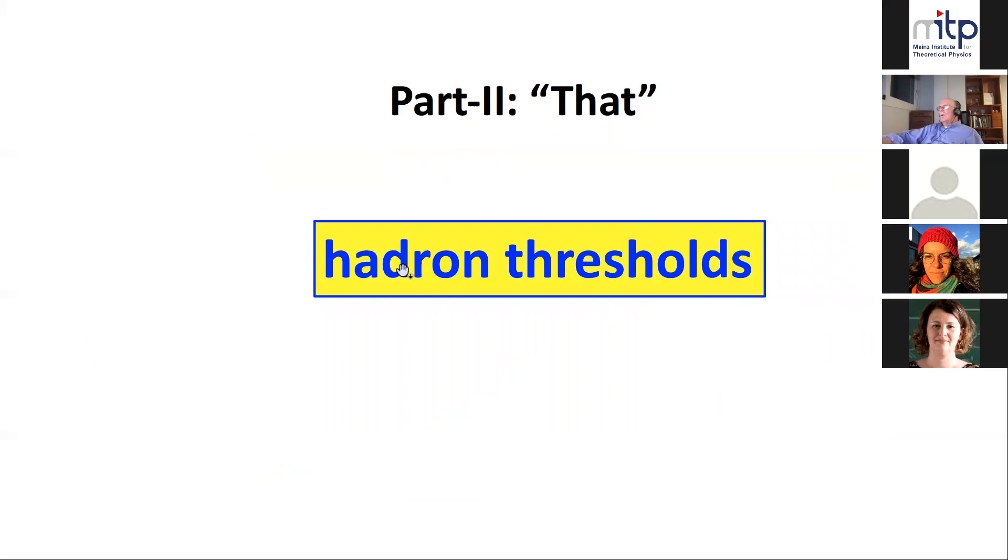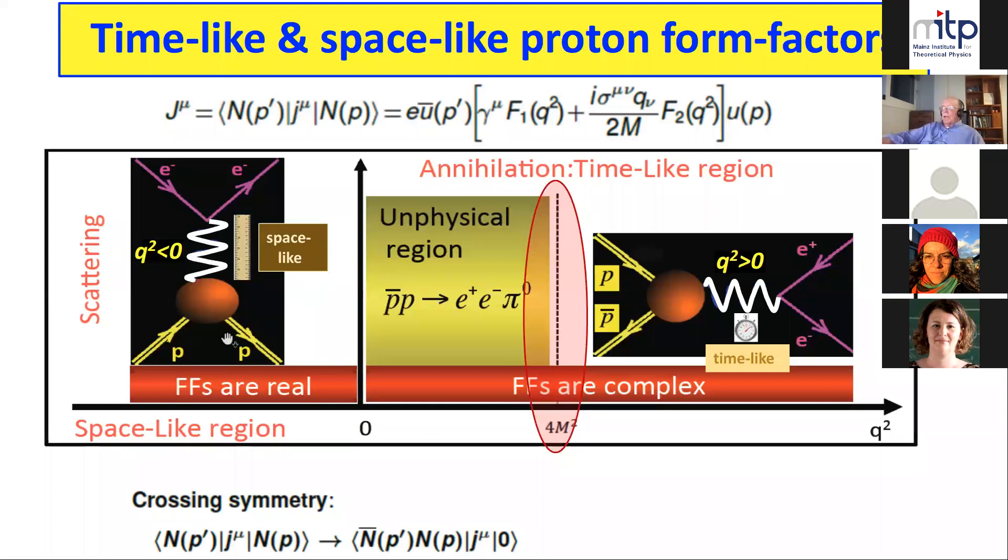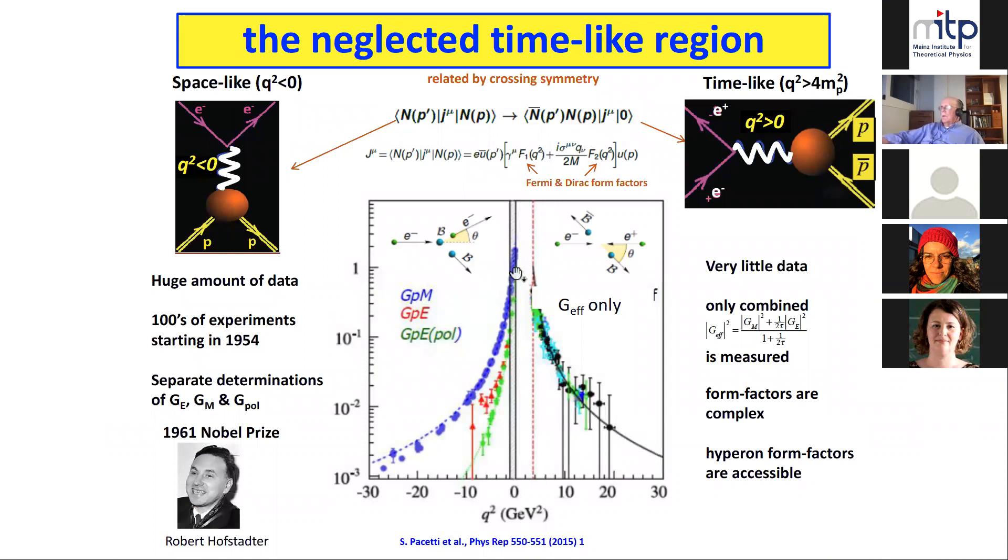The proton is still the source of interesting puzzles. Here's part two of my talk. I want to talk about hadron thresholds, but not for doubly charmed particles - I want to talk about hadron thresholds for ordinary particles. We talked about the proton's form factor in the space-like region. But this form factor is connected by crossing symmetry with form factors in the time-like region. Here you have proton anti-proton goes to e+ e-, or vice versa. It's the same analytic function that's supposed to work here and in between.